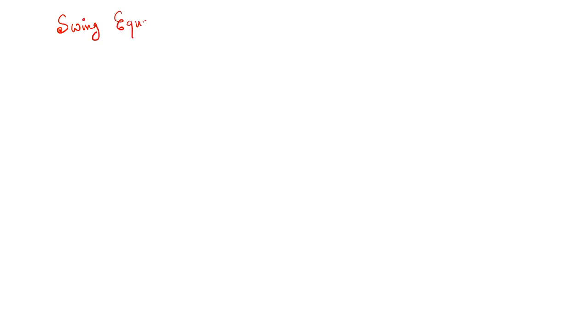We will go further to show how the SVC further improves transient stability of a power system. To discuss this, let us introduce another important concept: the swing equation. This is again taught in the electrical power system course. I will start with the swing equation for the uncompensated line.